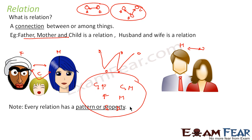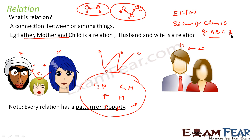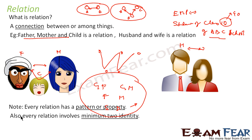Please note: every relation has a pattern or property. For example, the pattern here was father-mother-child relation, or husband-wife relation. Or when I said all the employees of Microsoft — there is a pattern that all those being considered are employees of Microsoft. Or consider students of class ten of ABC Public School — all 40 students have a relation because they are all part of class ten. Also, relation involves minimum two identities. With a single identity, you cannot establish a relation; you need minimum two.